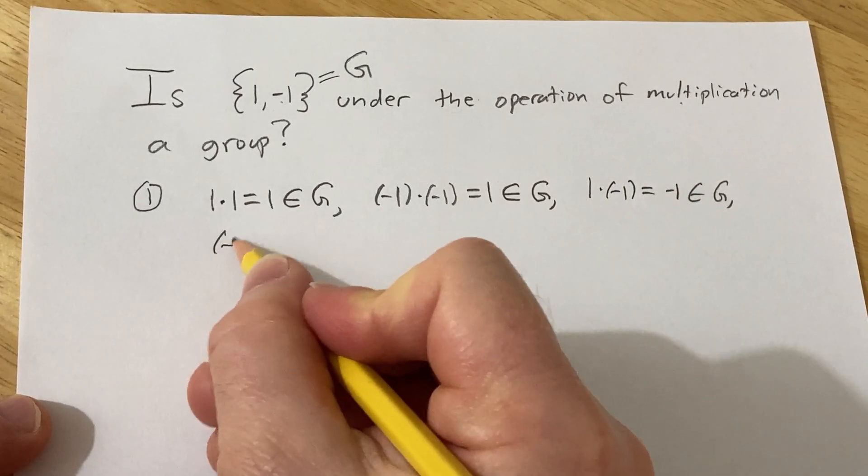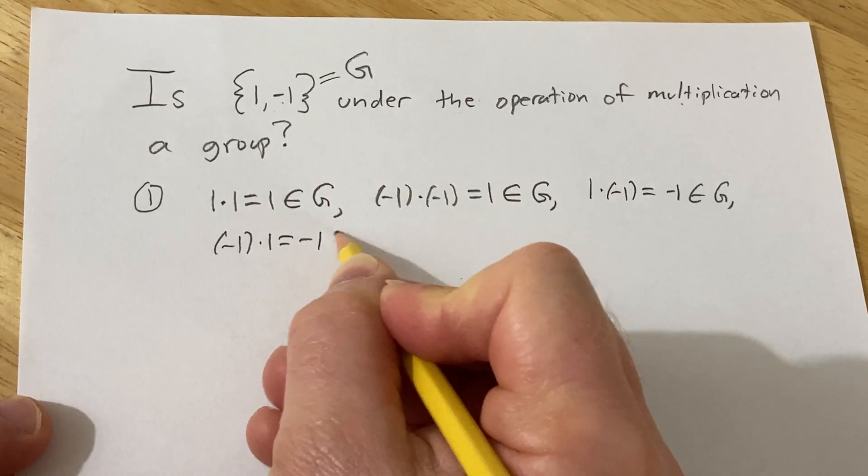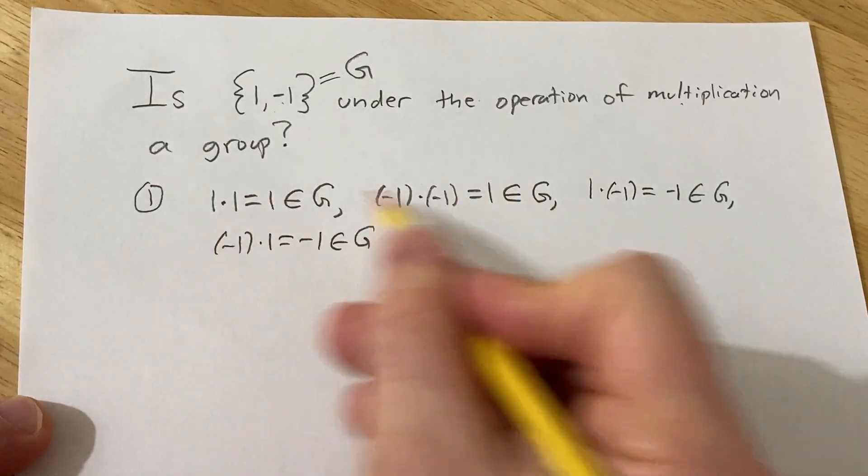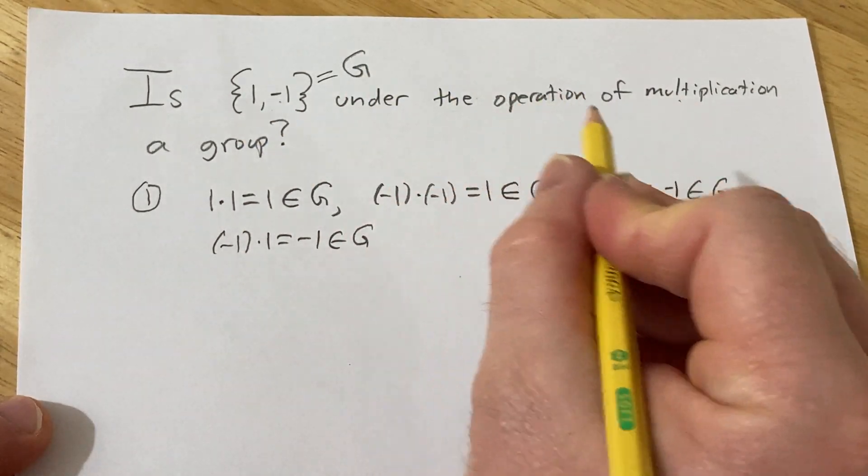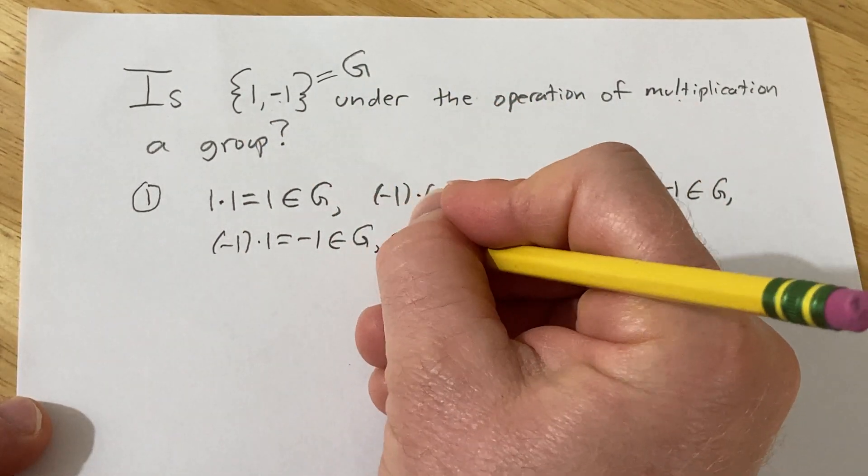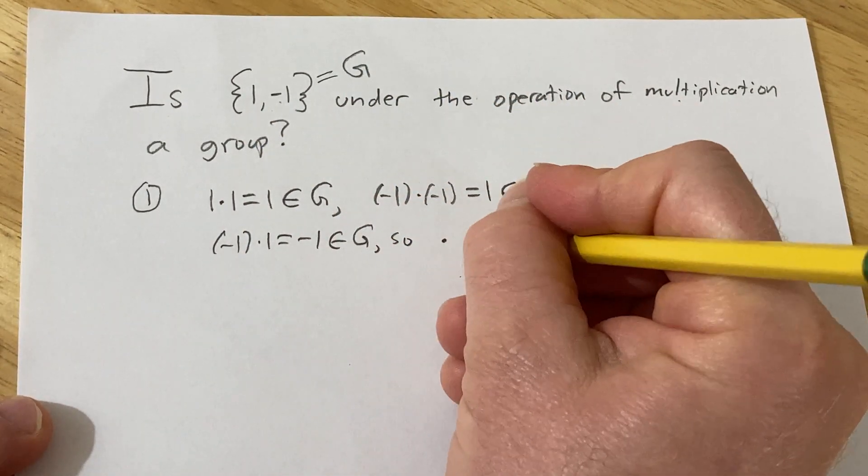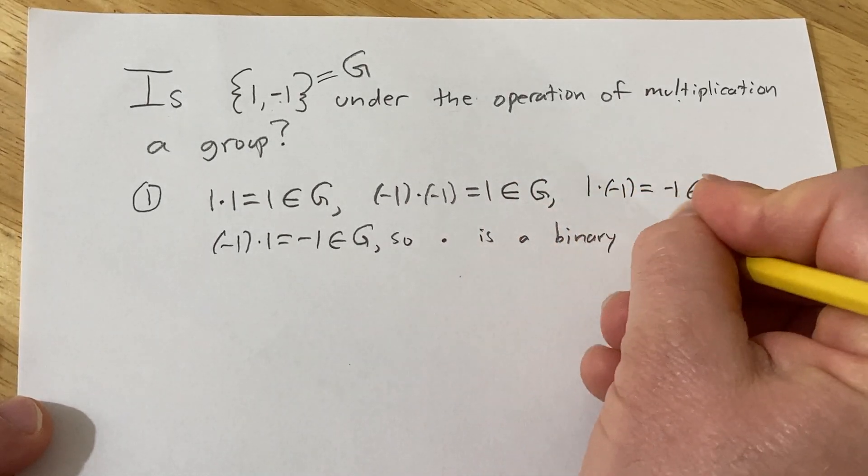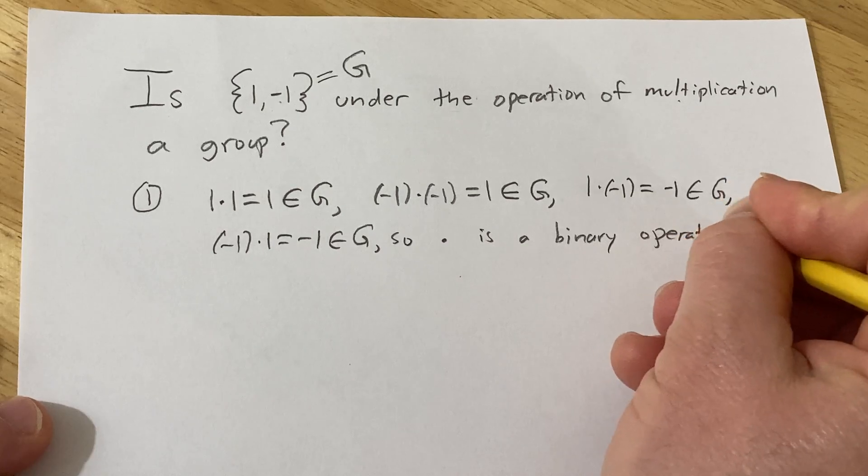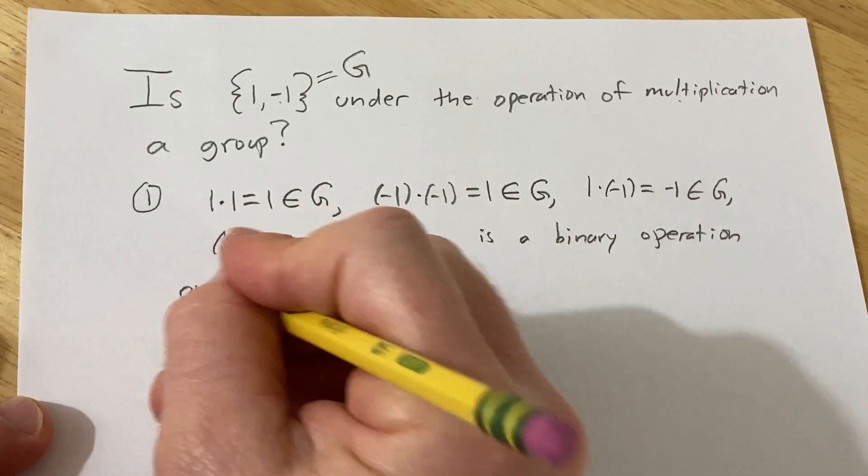And last but not least, we have negative 1 times 1, which is negative 1, which is in g. Those are all the possible products. And so therefore multiplication is a binary operation on this group. So dot is a binary operation on this group.